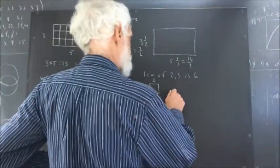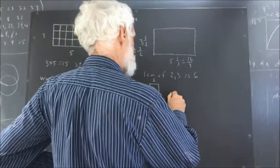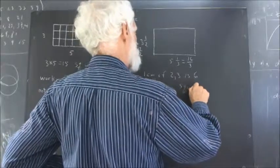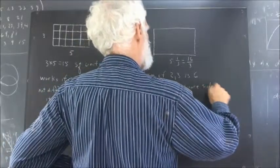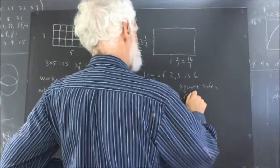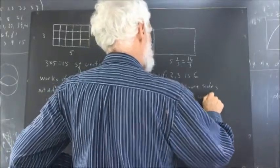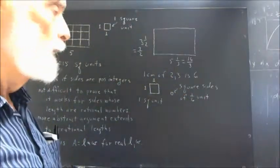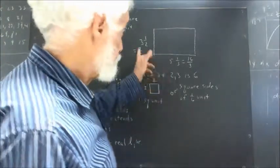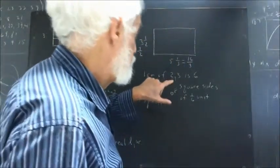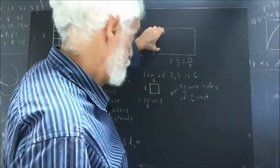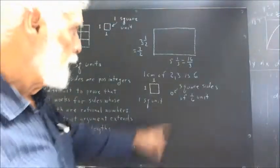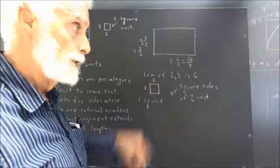So what I want to do is I want to make a square with sides of one-sixth of a length unit. I claim that by breaking this down enough I can fill this completely with squares of that size.